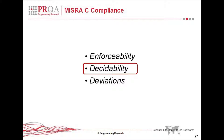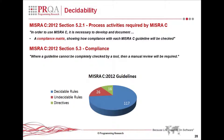Moving on, back to the subject of decidability. Section 5.2.1 of the new document covers process activities required in MISRA C. One of the requirements is that a development organization must draw up a compliance matrix demonstrating how compliance with each MISRA C guideline is going to be checked. The point is that compliance cannot always be enforced statically, because we have directives and also rules which are undecidable.